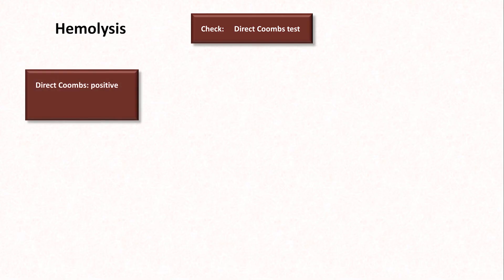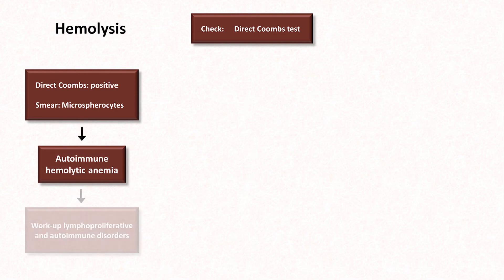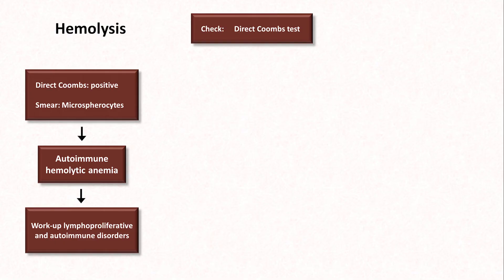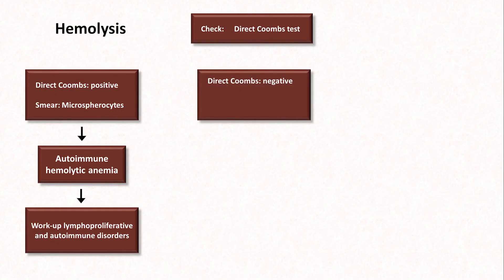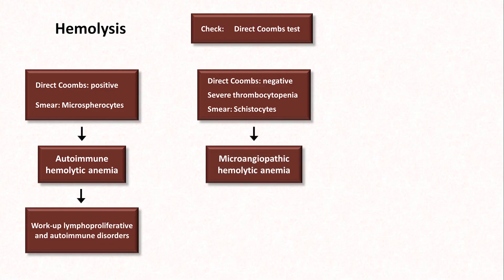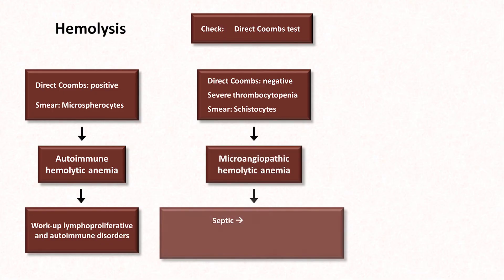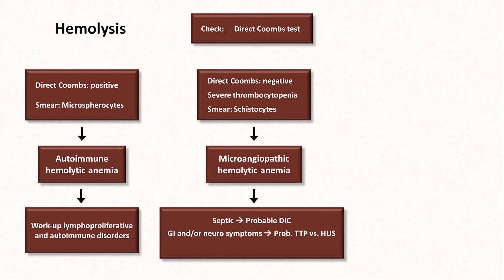If you suspect your patient has hemolysis, the main additional test to perform is the direct Coombs. If the direct Coombs is positive, plus or minus a smear showing microspherocytes, the patient likely has autoimmune hemolytic anemia, and you should next work them up for possible lymphoproliferative and autoimmune disorders, keeping in mind that many cases of autoimmune hemolytic anemia are idiopathic or primary — not associated with another disorder. If the Coombs is negative, the patient has severe thrombocytopenia, and you see schistocytes on smear, they have microangiopathic hemolytic anemia. If the patient is also septic, it's probably DIC. If they have prominent GI and/or neuro symptoms, it's probably TTP or HUS. And if the patient is pregnant, think about HELLP and DIC.